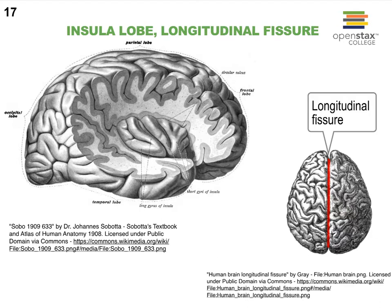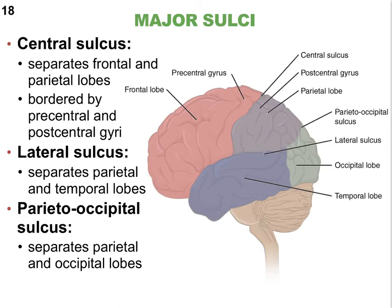A very deep sulcus is called a fissure. What we find in between your two cerebral hemispheres is called the longitudinal fissure — it separates your two cerebral hemispheres. We'll have a second major fissure, the transverse fissure, that separates the cerebrum and cerebellum.